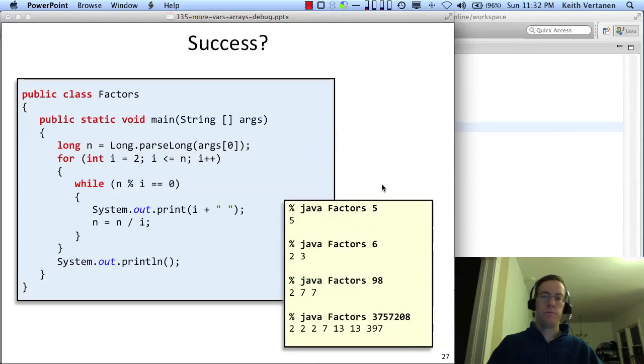So, is this a correct program? Run it for factors 5. That works. 6, 2 times 3. 98, 2 times 7 times 7. Run it for a bigger number. Looking good.